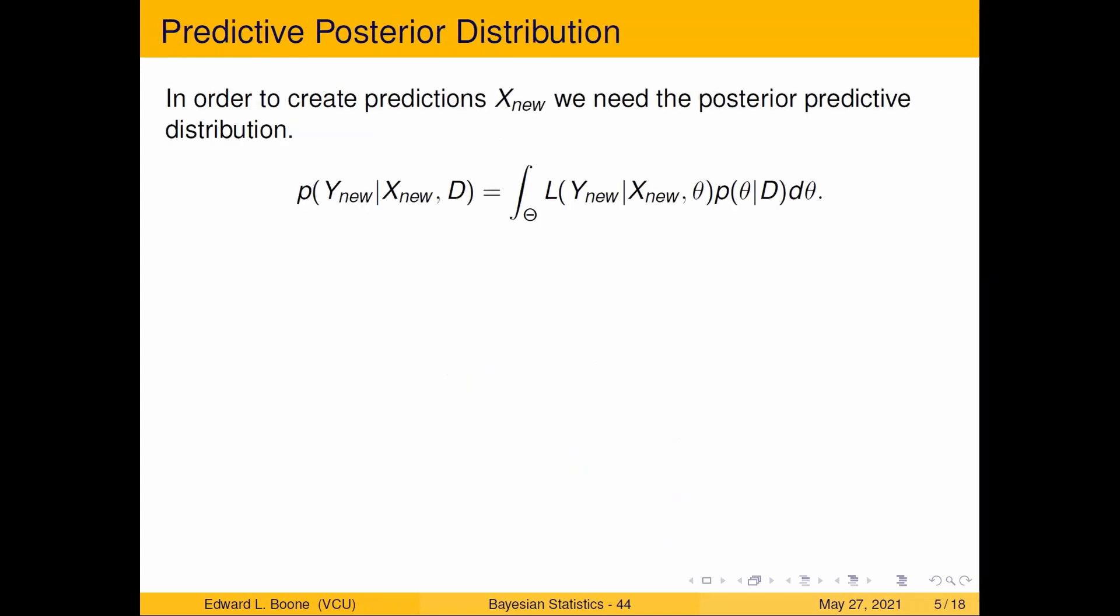How do we do this? We're going to use the predictive posterior distribution. In order to create predictions, we need some x values that we want to predict at. What time do I want to have a prediction at? In our case, we went up through 1997. X could be 2000, 2010 - when do we want to have this predicted? The posterior predictive is my new value of y given my new value of x and the data that I've seen.